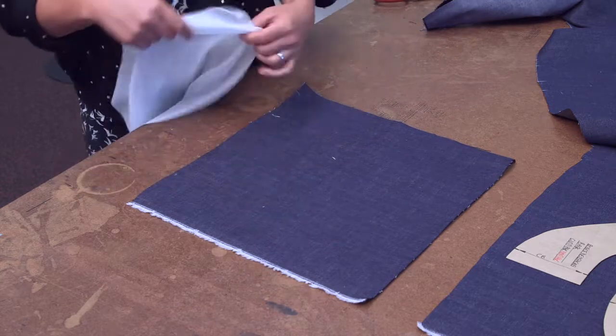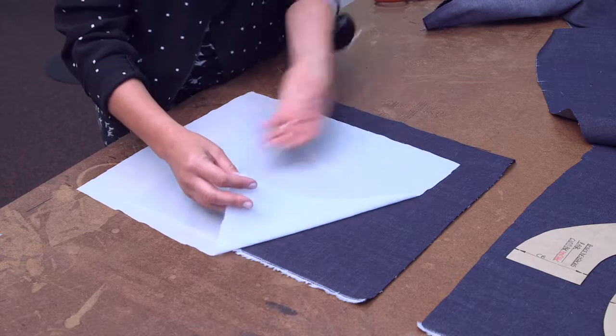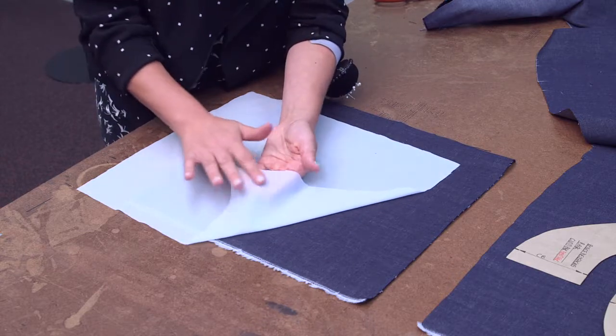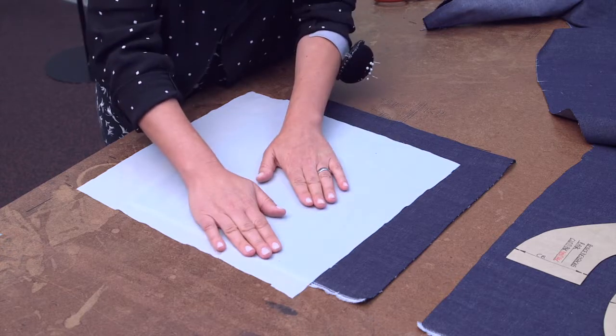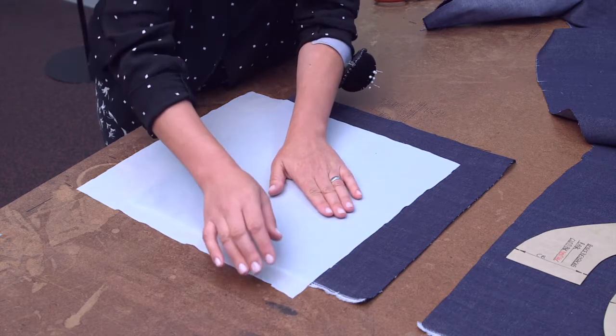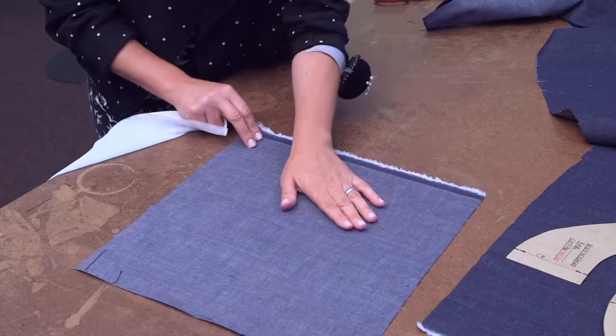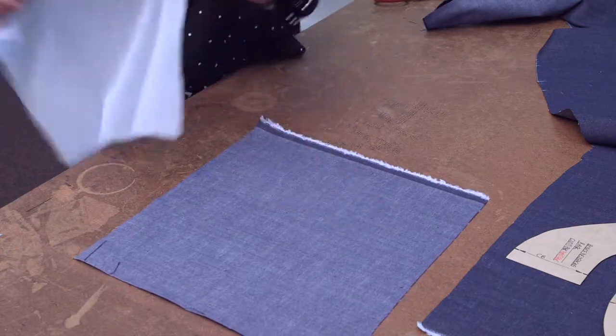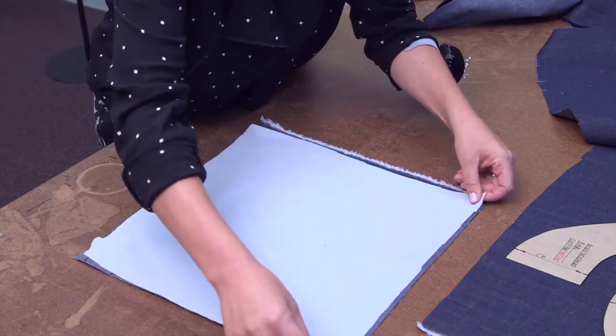This is the fabric piece that I'm going to use and I've cut out a fusing piece as well. Now the fusing has a rough side to it which is the glue side and a soft side to it. The soft side is the non-glue side. We're going to fuse onto the wrong side of the fabric with the glue side facing down onto the wrong side of your fabric.